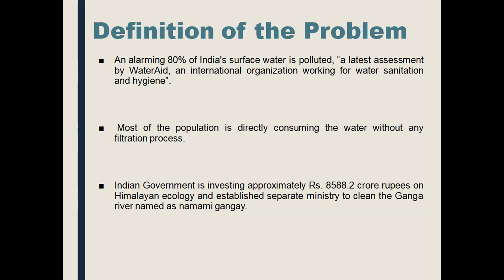This is an alarming situation. Due to over-construction in hill areas and difficult geography, 80 percent of India's surface water is polluted, according to the latest assessments by international organizations working on water, sanitation, and hygiene. Most of the pollution comes from people directly consuming water without any filtering process. The poor population doesn't have any filtration facilities, while medium and higher income groups use filters.